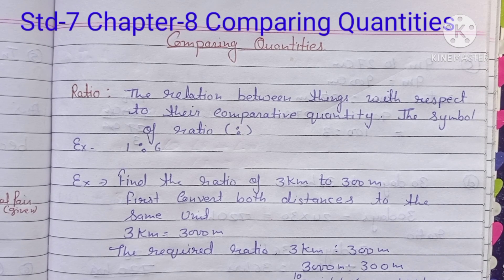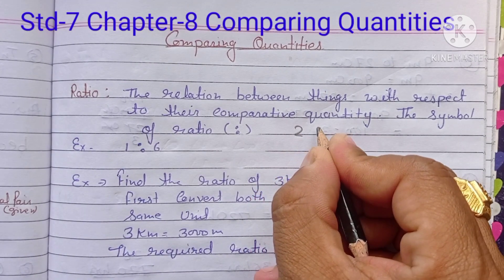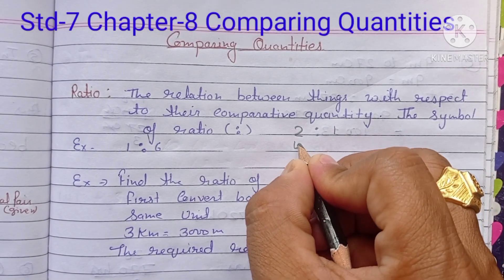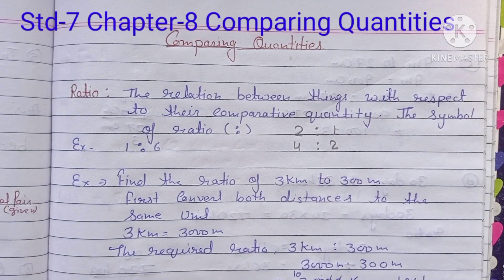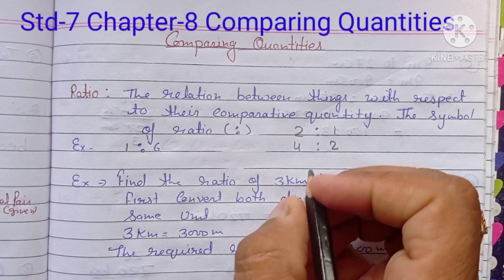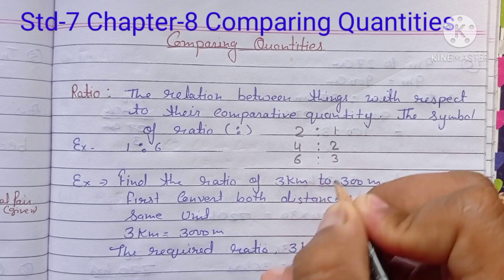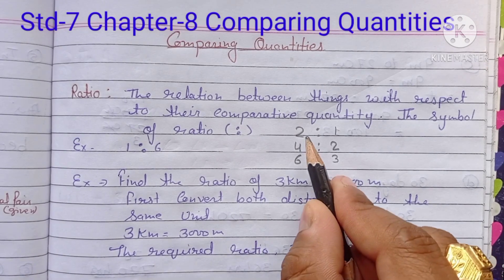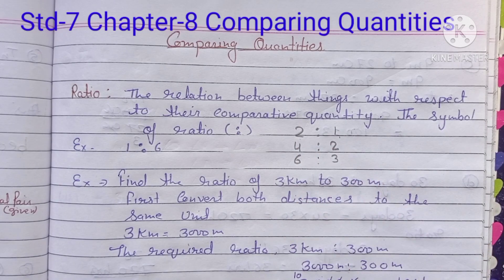Suppose we have one class with two girls and one boy. Next: four girls and two boys. Then six girls and three boys. We compare: two girls to one boy, four girls to two boys, six girls to three boys — this is the same relation. This is our ratio.